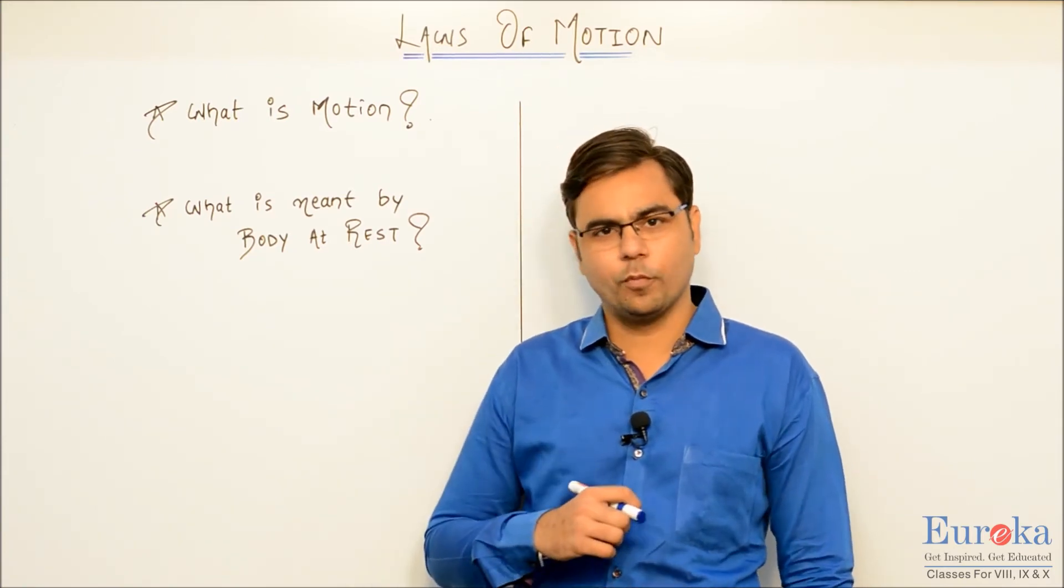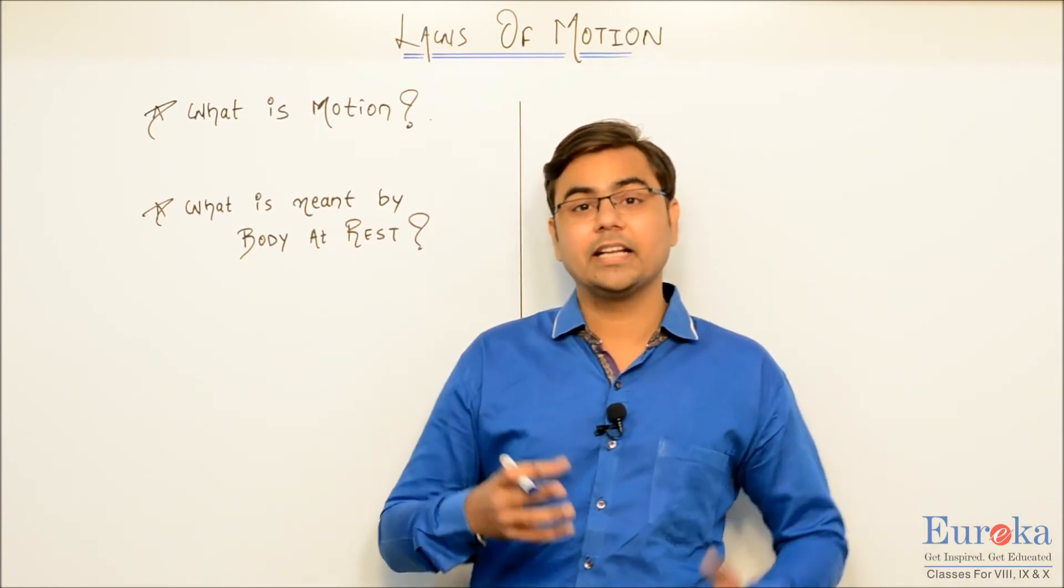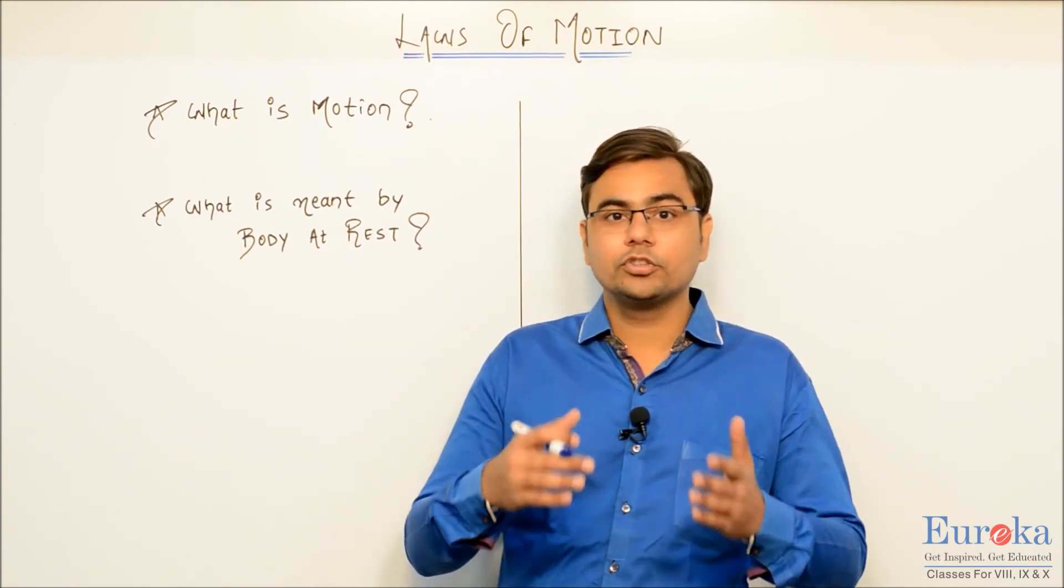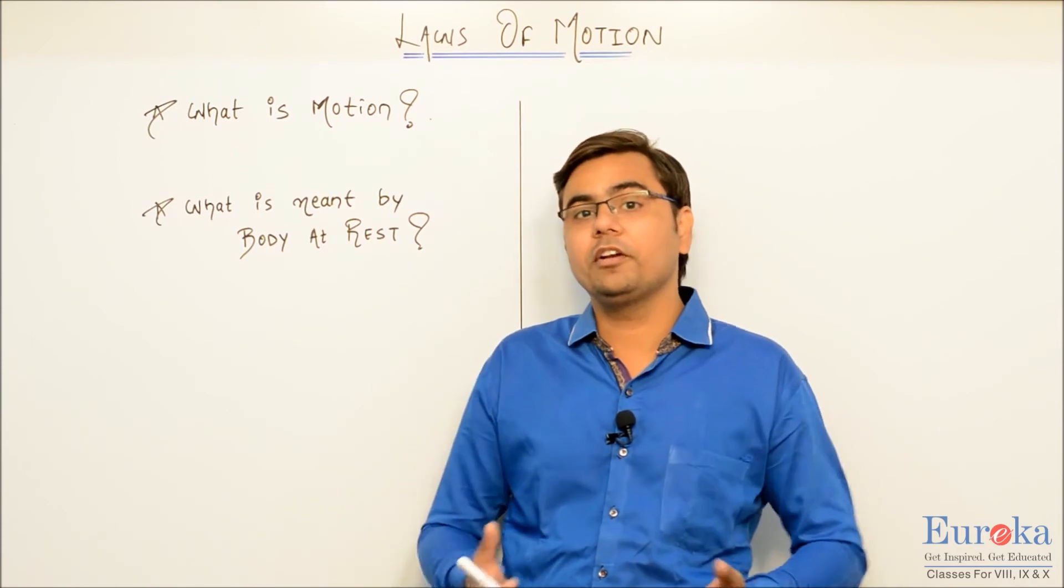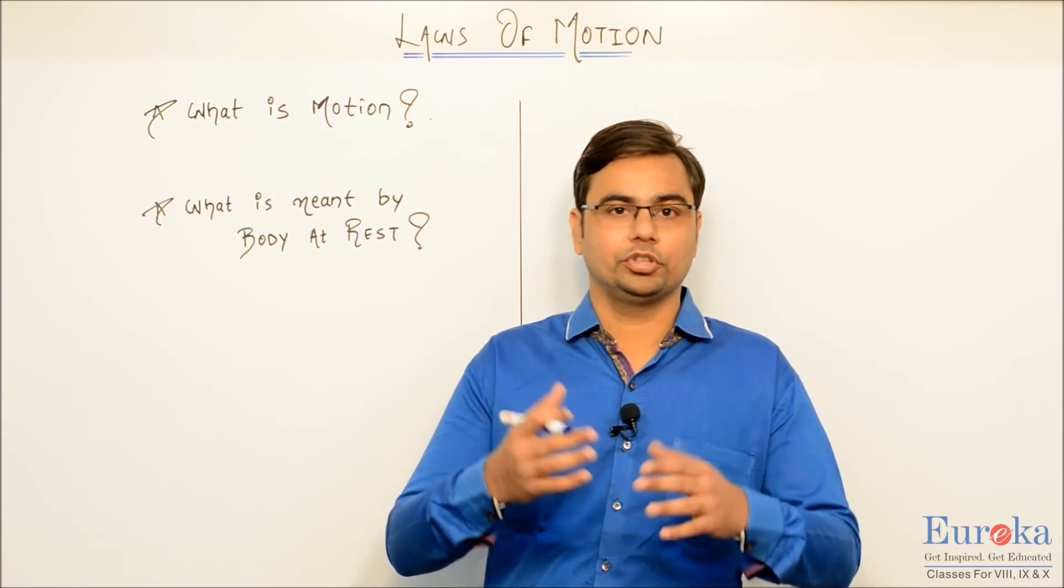Can we think of a few examples of both of this? Let's say an example of a body in motion. Can I say a man walking on a road can be considered as an example of motion? A bus going on a straight road can be considered as an example of motion. An aeroplane flying in the sky. Earth rotating around the sun. All these are examples of motion.